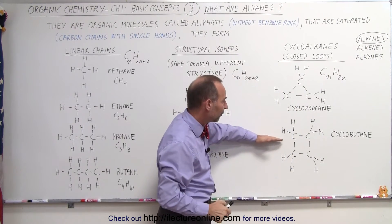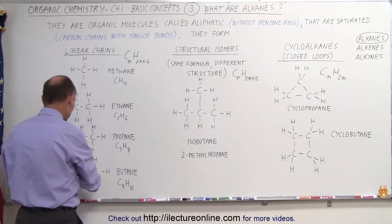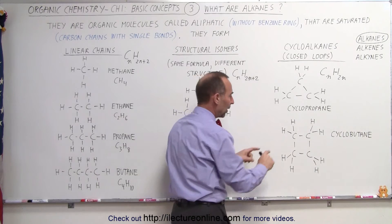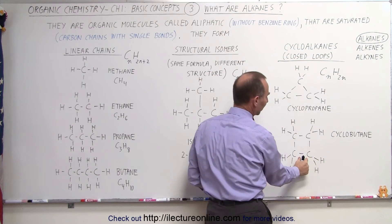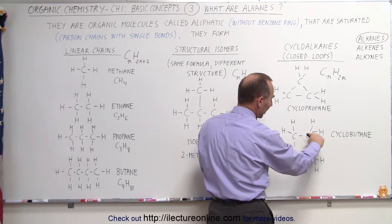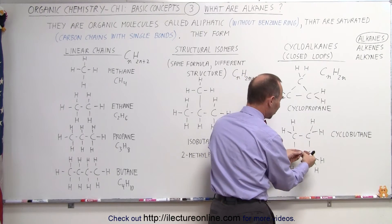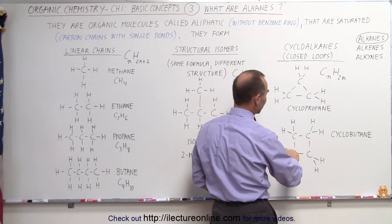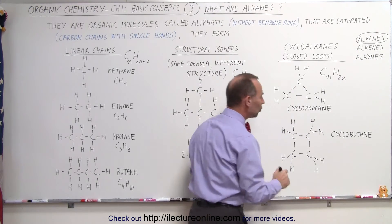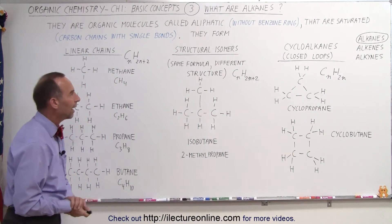Here we have an example of cyclobutane. You take butane with four carbons, chain it around, and reattach the ends together. Now you have a square-shaped chain that is attached at the ends. Notice: four carbons, eight hydrogens — two hydrogens per carbon — when you have a cycloalkane.